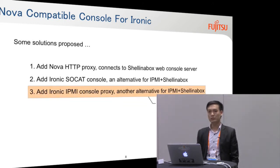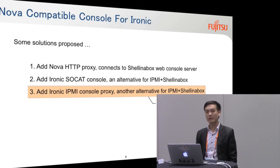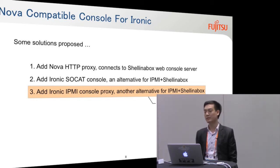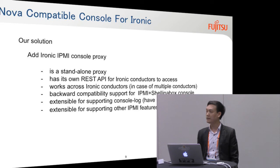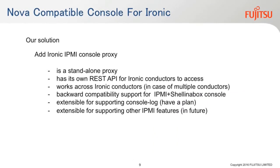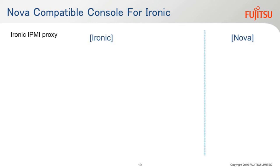Our solution is to add the Ironic IPMI console proxy as an alternative for IPMI shell-in-a-box. With our solution, there are some advantages. This proxy is a standalone proxy with a REST API for Ironic conductors to access and work across multiple Ironic conductors. It can also provide backward compatibility support for IPMI and shell-in-a-box console. And in the future, it may be extensible to support console log and other IPMI filters.